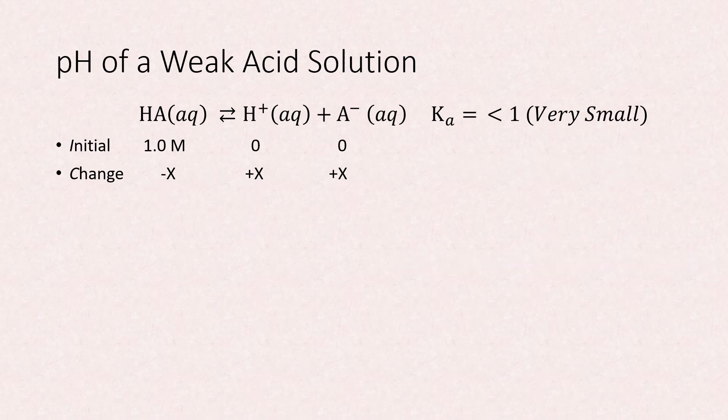Sum these initial and change terms to get the equilibrium concentrations of 1.0 minus x for HA, and plus x for both H plus and A minus. You can see that the concentration of H plus is x. Thus, the goal is to solve for x.